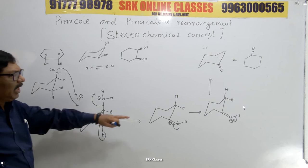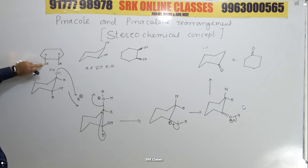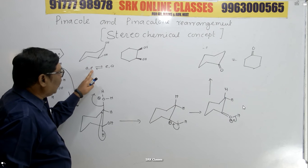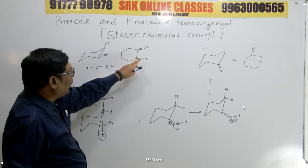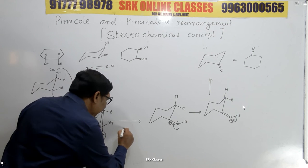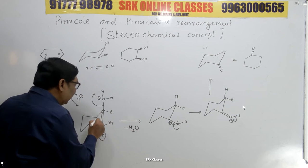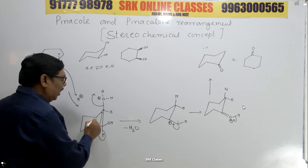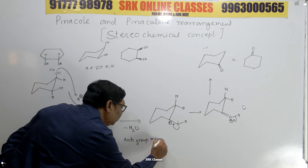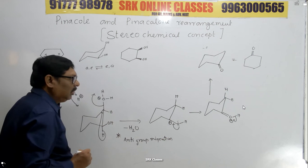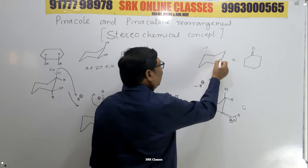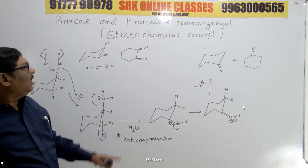This is converted to cyclohexanone. In the cis compound, both OH groups are on the same side. In the 1,2-diol one OH is axial and another is equatorial. The steps are: protonation and oxonium ion formation, then elimination of H2O with simultaneous anti-group migration, then oxonium ion formation again, followed by elimination of H+ and formation of the ketone. This is about the cis compound.